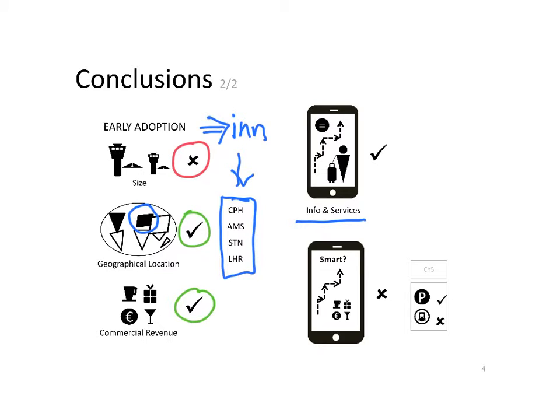When we were analyzing the information and services provided through these mobile applications, we saw that they tend to be very similar to the services provided on site at the terminal. However, how were airports using these smart possibilities?